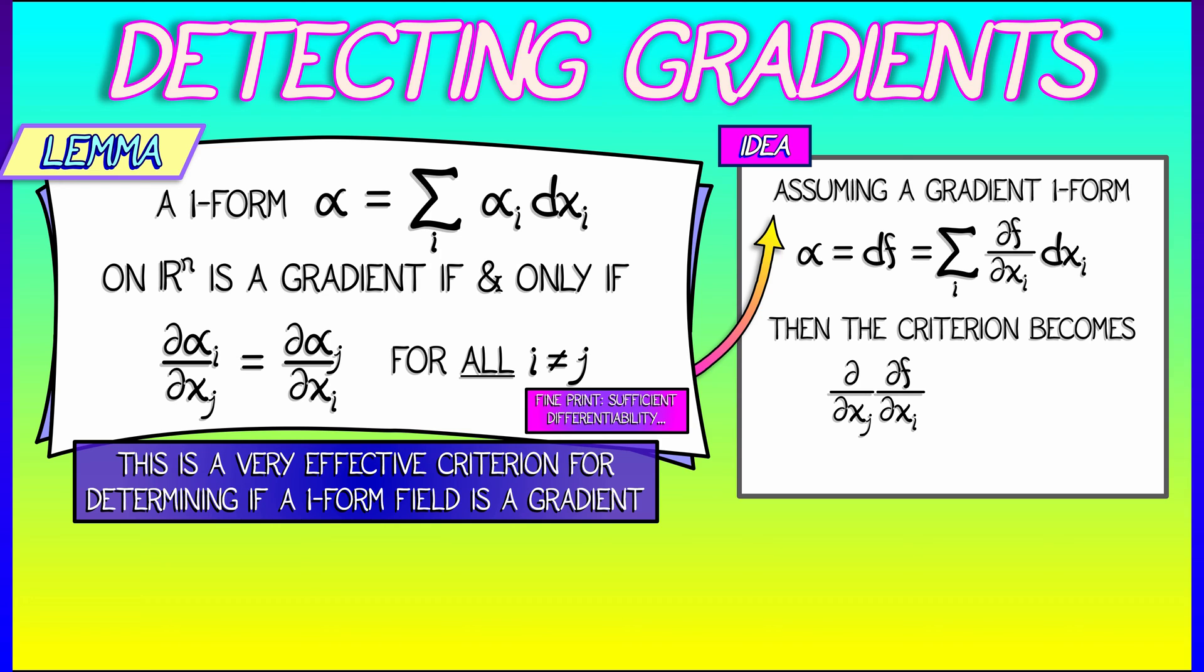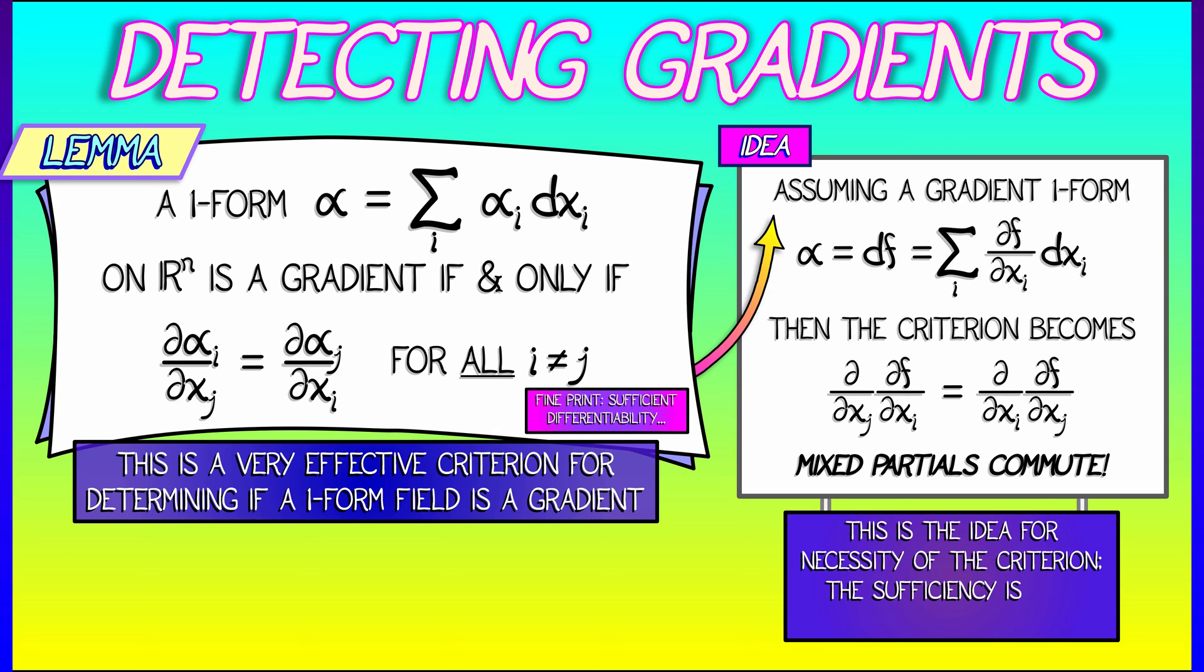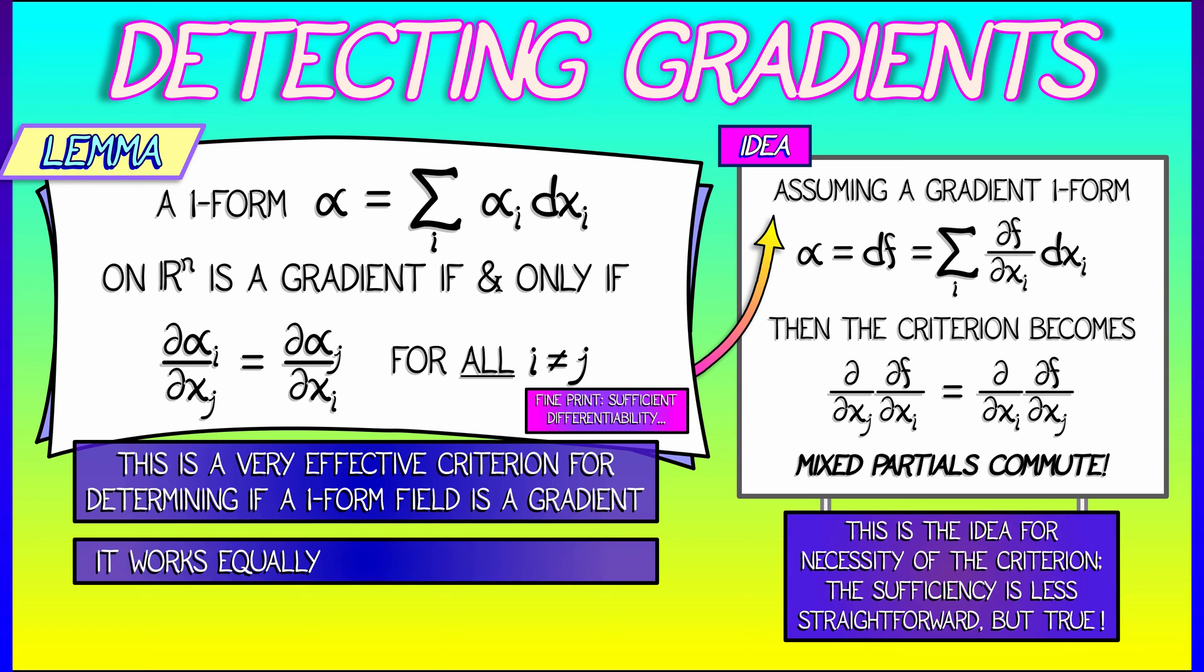That has to be the same as the j-th component, partial f partial x_j, differentiated with respect to x_i. And we see that in this case, it's clearly true. Why? Because mixed partials commute, that thing that we learned way back in volume 2. Now, this is the idea for why this criterion is necessary. The sufficiency is not as easy to show, but it is nevertheless true. If all these partial derivatives match up on all of R^n, then you've got a gradient.